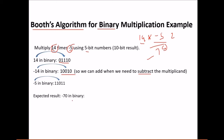The expected result of 14 times minus 5 is minus 70. This binary number, where the leading 1 stands for the negative sign, represents minus 70. We are now going to multiply these two numbers through Booth's algorithm.